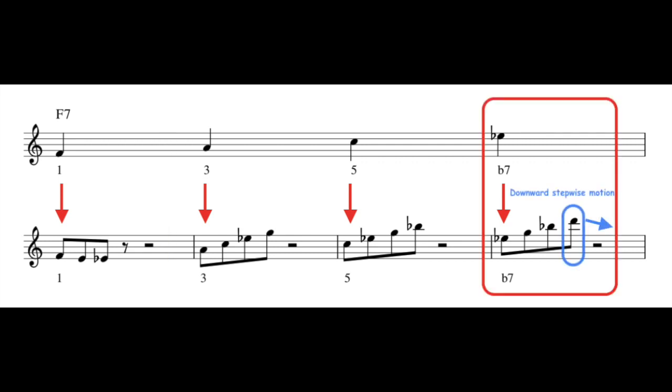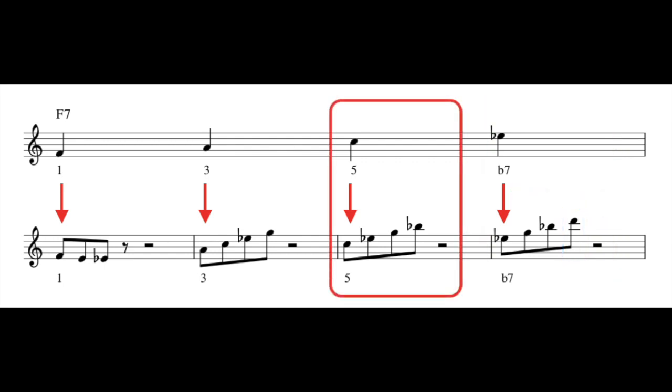So from here, since the line ends on a D, we can continue with downward stepwise motion, going down a step to C, and go into that small line that begins on the 5th, or C.